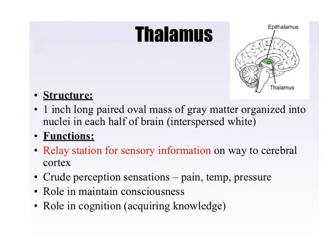Now that we see where the thalamus is located — just superior of the midbrain, just superior and posterior of the hypothalamus and the pituitary gland — what does it do? What are its functions? This is written in red for a reason. This is the one you're mostly going to need to know: it is a relay station for sensory information.